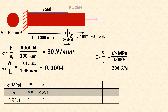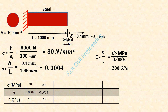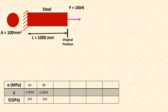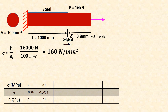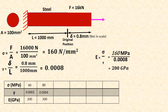Again double the force to 16 kN — elongation proportionally increases: delta equals 0.8 mm, sigma equals 160 MPa, gamma equals 0.0008, Young's modulus equals 200 GPa — same value. When force is removed, returns back to original position.